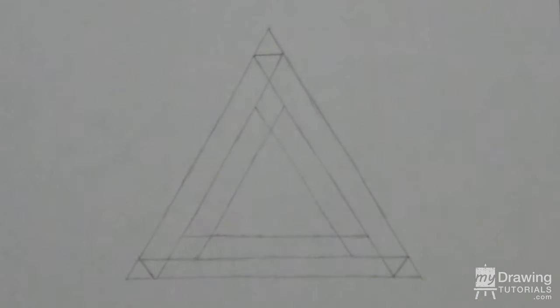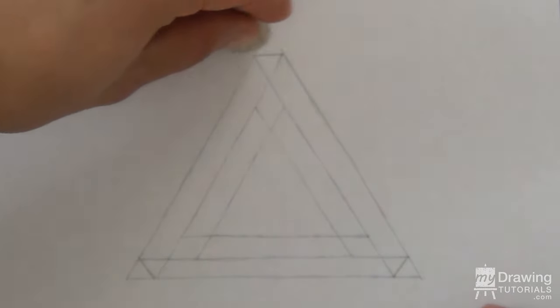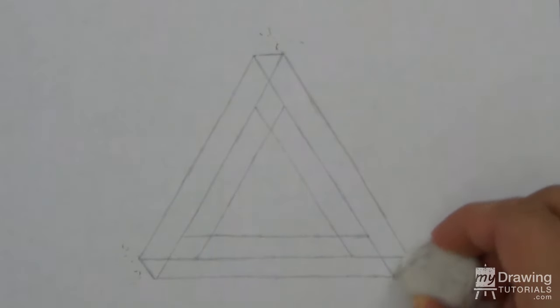And that's it, that's all the lines we have to make. Our impossible triangle is in here somewhere, we just have to make it visible now. So first, erase the three corner tips of the larger triangle.